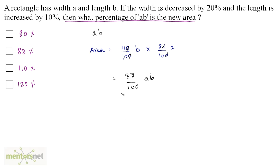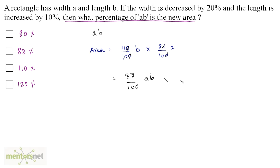This is not yet in percentage. To convert to percentage, multiply by 100, so the 100s cancel. We get 88 percent of AB. The new area is 88 percent of AB, and that is option B.